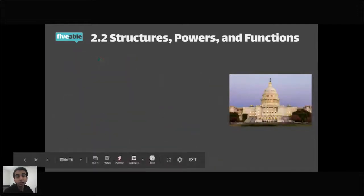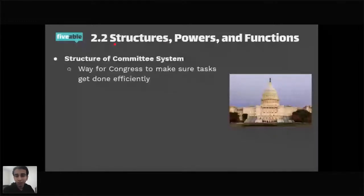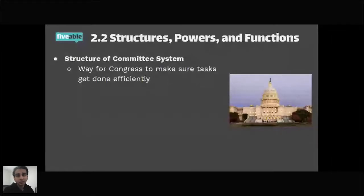The committee system exists because Congress has a lot of bills to address and needs to delegate tasks efficiently. Committees are present in both houses. Standing committees are permanent and focused on specific areas of policy — like the Foreign Relations Committee or Energy Committee. Select committees are for a specific purpose and only for a limited time. Conference committees resolve differences when the House and Senate pass different versions of the same bill.